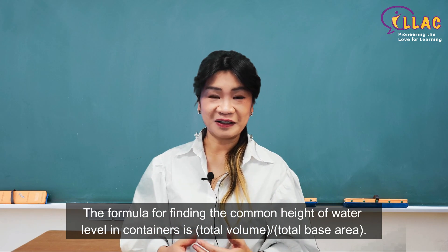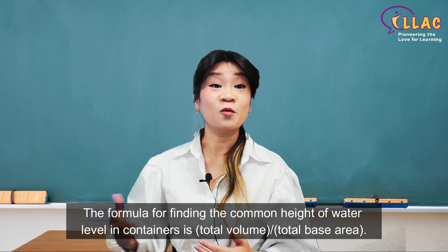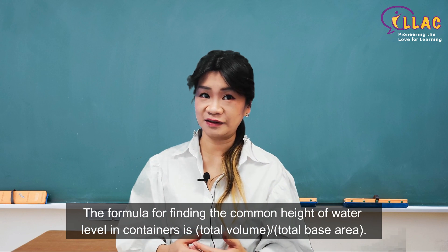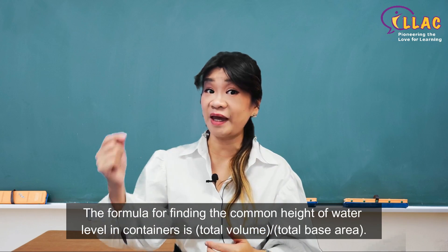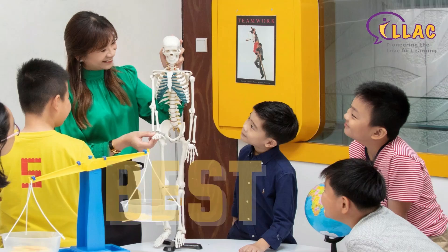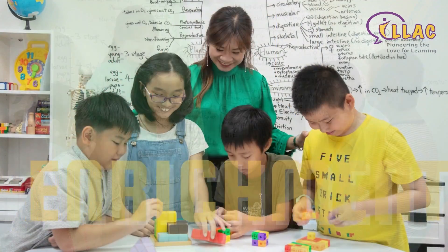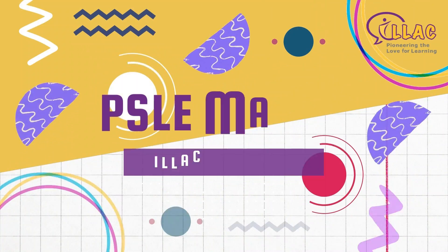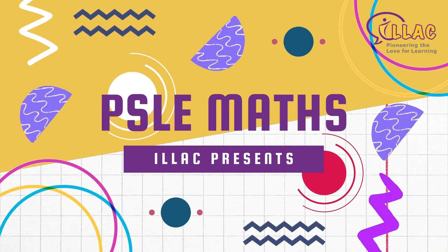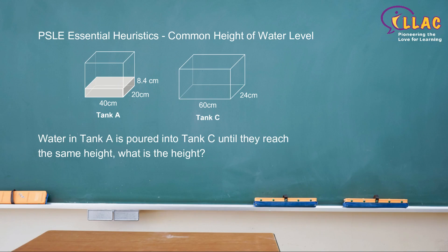The formula for finding the common height of water level in containers is total volume over total base area. Water in tank A is poured into tank C until they reach the same height. What is the height?